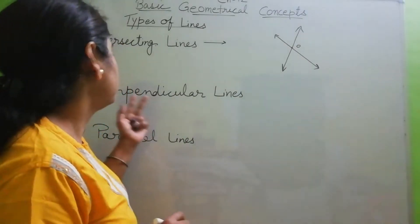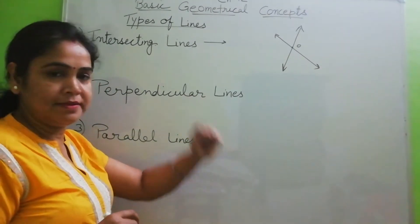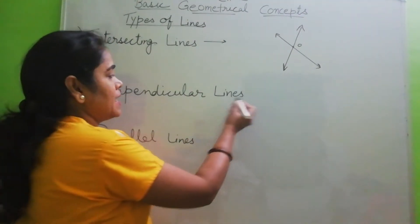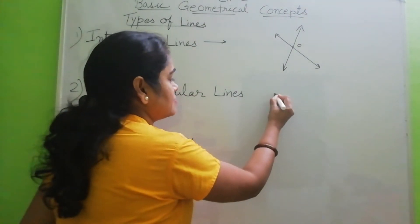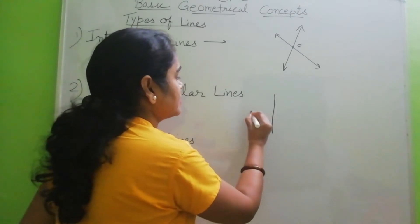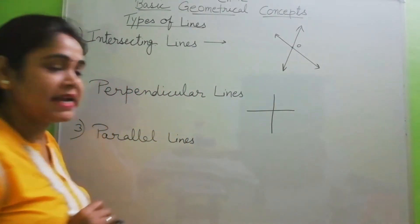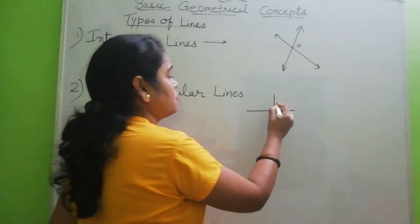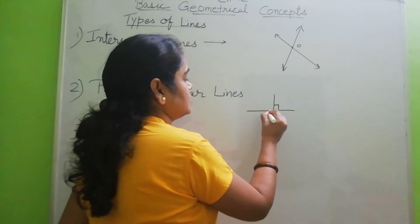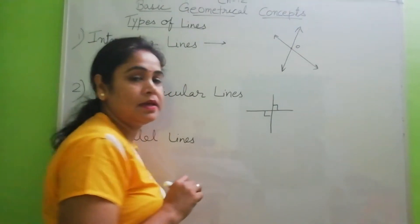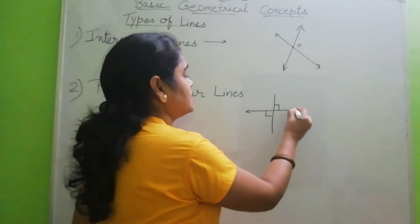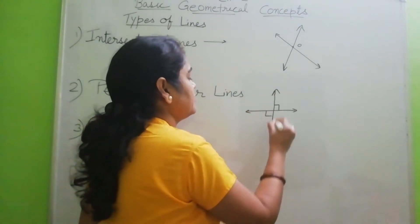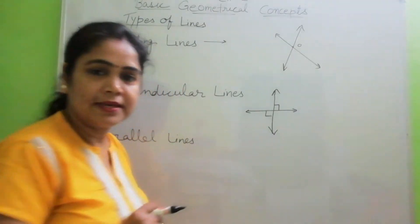Next is perpendicular lines. Perpendicular lines, when two lines intersect each other at 90 degree. Here which angle is formed? 90 degree. When they intersect each other at 90 degree, they are called perpendicular lines.